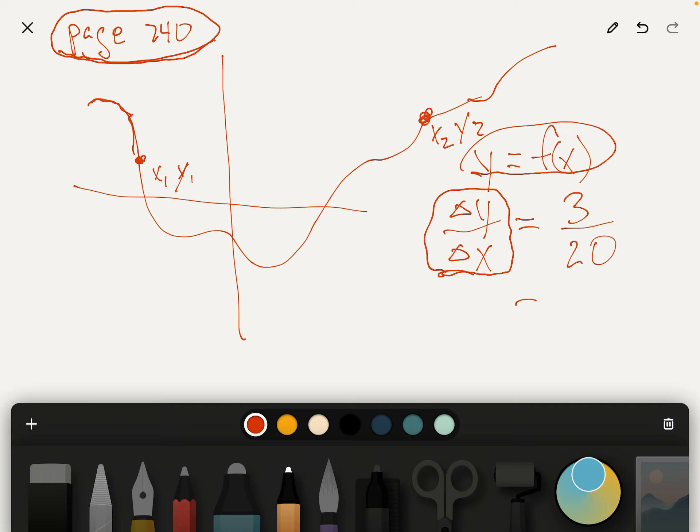All right, well that's it. So if you had a line connecting these two, 3 over 20 would be the slope of that line.